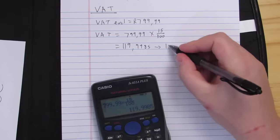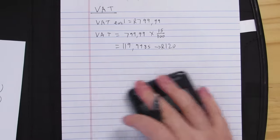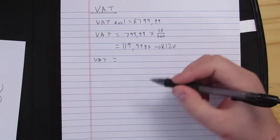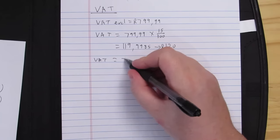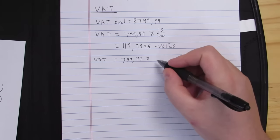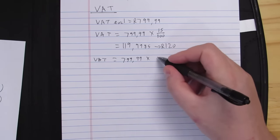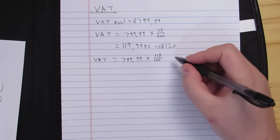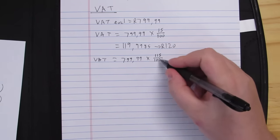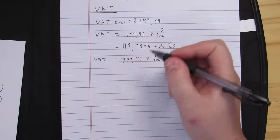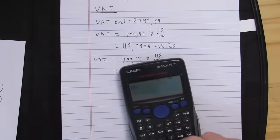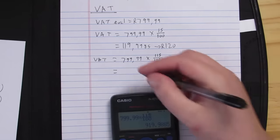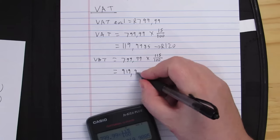We round that off to 120 Rand. Now, if I wanted the VAT inclusive amount, I have two options — I can just add the VAT straight to the exclusive price, or use the formula. Using the formula: what I have is 799.99 — my VAT exclusive amount — and I want my VAT inclusive, so I multiply by 115 over 100. I type 799.99 multiplied by 115 over 100 into my calculator.